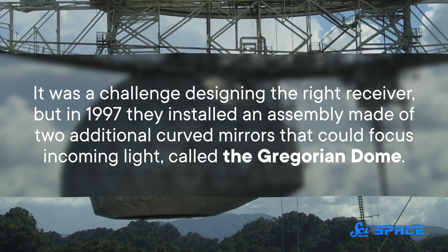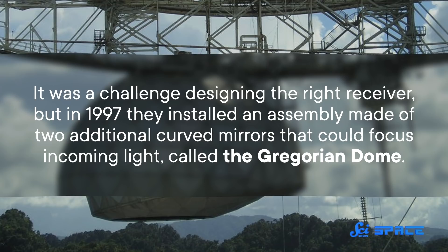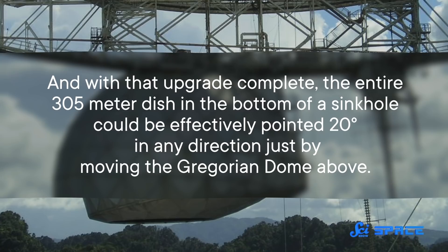It was a challenge designing the right receiver, but in 1997 they installed an assembly made of two additional curved mirrors that could focus incoming light, called the Gregorian dome. And with that upgrade complete, the entire 305-meter dish in the bottom of a sinkhole could be effectively pointed 20 degrees in any direction just by moving the Gregorian dome above.